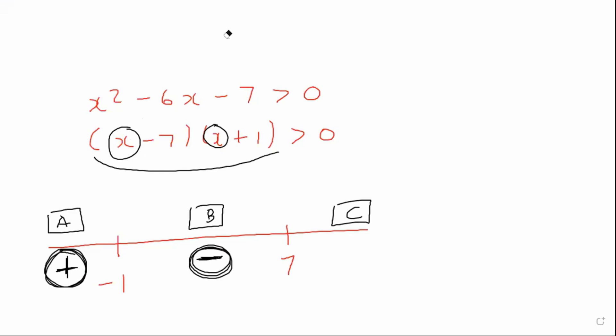Then you choose a number in this interval over here so you can choose any number that you like. I'm going to choose the number 8. So you plug 8 into the place of x and you see 8 minus 7, 8 plus 1. And that will give us a positive.